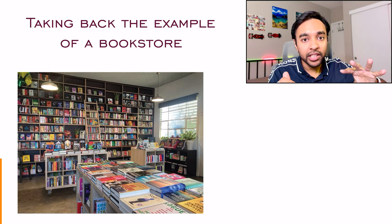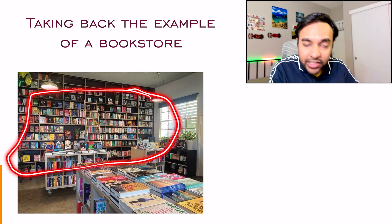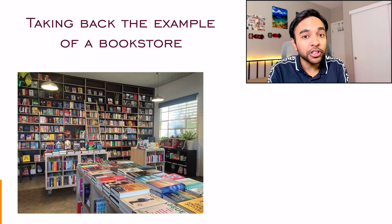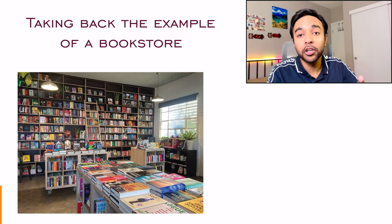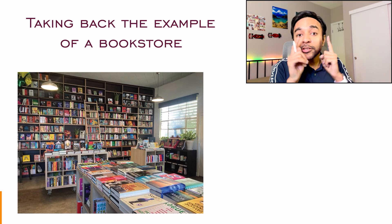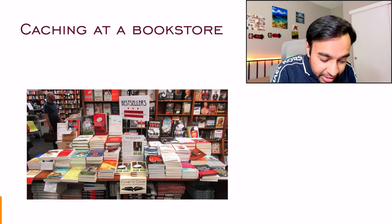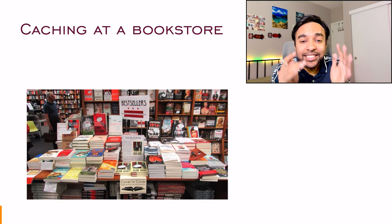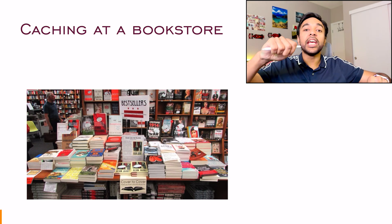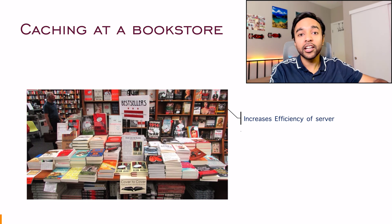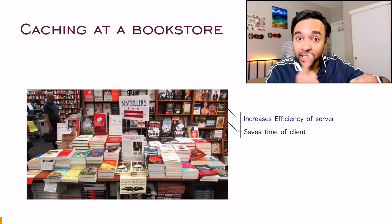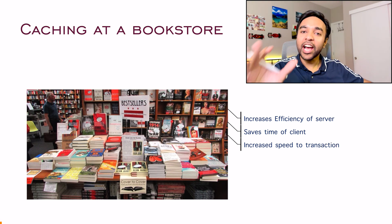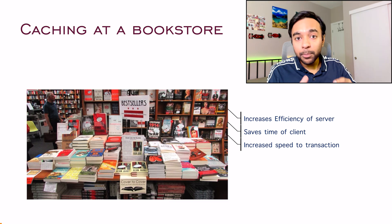And this speeds up the process so much. If this shelf wouldn't have been there, your customer will have to look at all of these other books and then go find it. It could be a chance that the customer becomes unhappy and they just leave. It is also possible that they don't even find the book just because of shortage of time or your bookstore is so huge. So what are we doing? Basically, what we do is we keep one section of the bookstore as bestsellers. And this bestseller is caching. You have predetermined that these are some of the books that a customer can come in and they want it. So it saves your time, it saves the customer's time and it increases the speed of the transaction as well. So this is exactly how caching works in a real life.